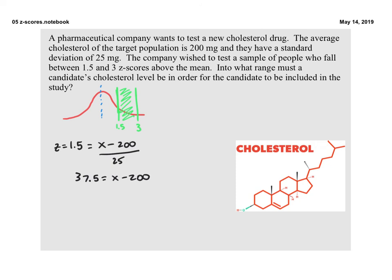And so we'll add 200 to that. And that, of course, gives us x equal to 237.5. And so that's going to be our lower portion of this interval.